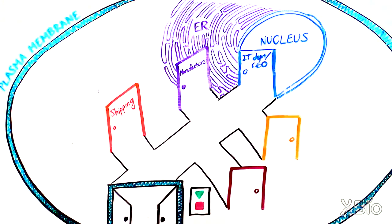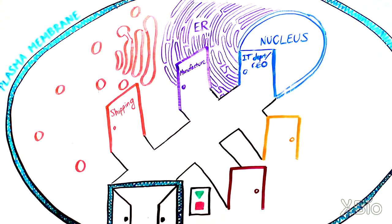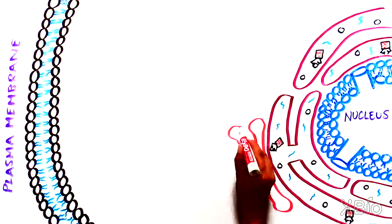Once these materials are made in the ER, they are sorted, packaged, and delivered to the cell's shipping department, the Golgi apparatus.